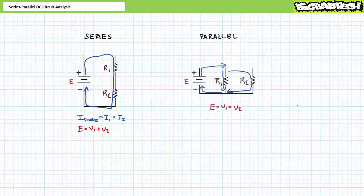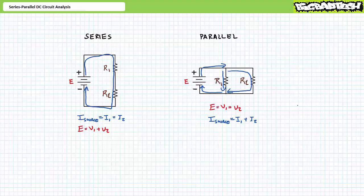Voltage across elements in parallel is the same. Voltage is a two-point measurement. Any and all elements hooked side by side or in parallel with one another to the same two points will experience the same voltage differential. Kirchhoff's current law is an especially useful circuit analysis technique for elements or paths in parallel, which states that the sum of currents entering a node will equal the sum of currents leaving a node — or stated more simply, what goes in must come out. Parallel circuit analysis additionally employs a handy shortcut called the current divider rule.